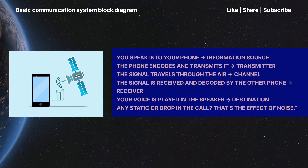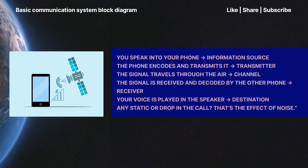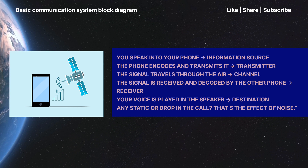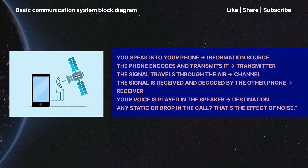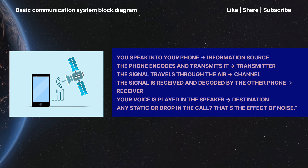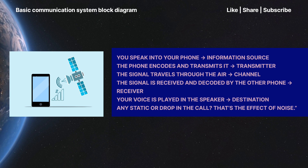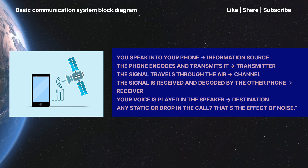Let's take a mobile phone call as an example. You speak into your phone – that is the information source. The phone encodes and transmits it – that is the transmitter. The signal travels through the air – that is the channel. The signal is received and decoded by the other phone – that is the receiver. Your voice is played in the speaker – that is the destination. Any static or drop in the call – that is the effect of noise.